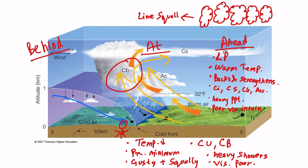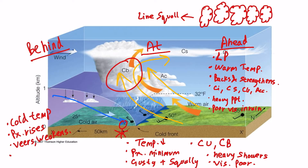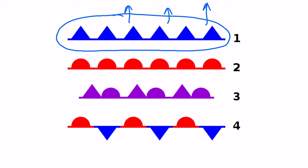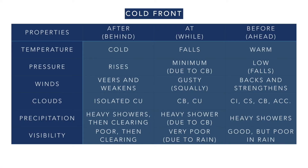Behind a cold front, after it has passed, we observe cold temperatures because we are now in a region of cold air. The pressure starts to rise and the winds veer and weaken. The clouds are just isolated cumulus clouds. The heavy showers clear up and visibility is bad initially due to fog but improves gradually. On a surface pressure chart, a cold front is indicated with triangles pointing in the direction of its movement.